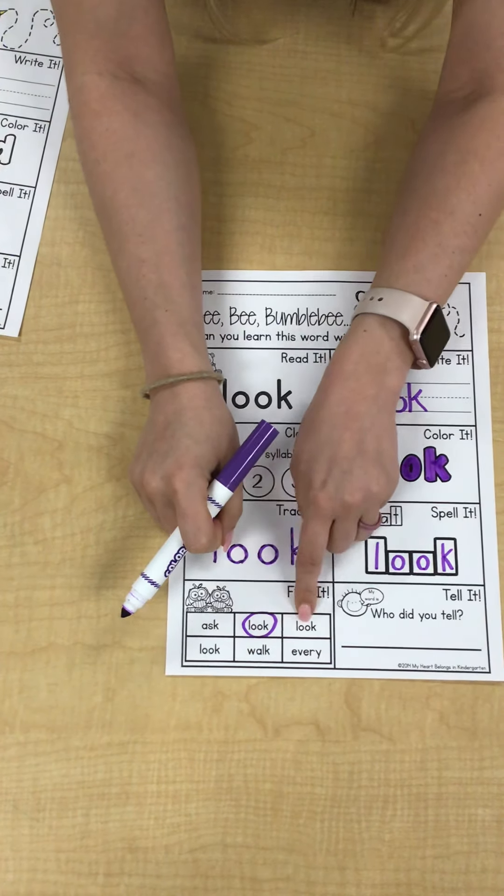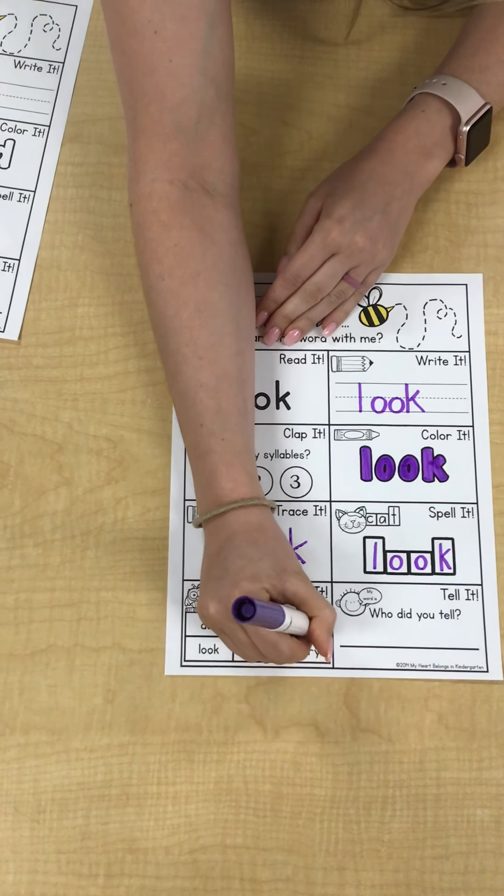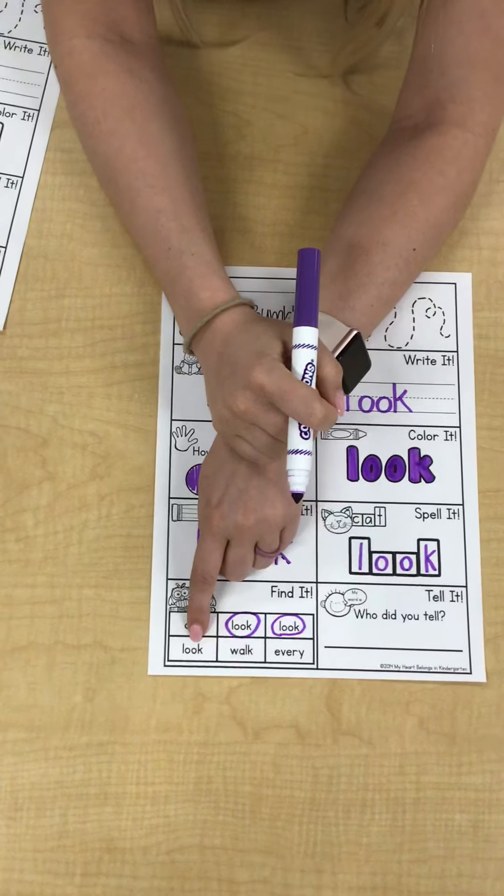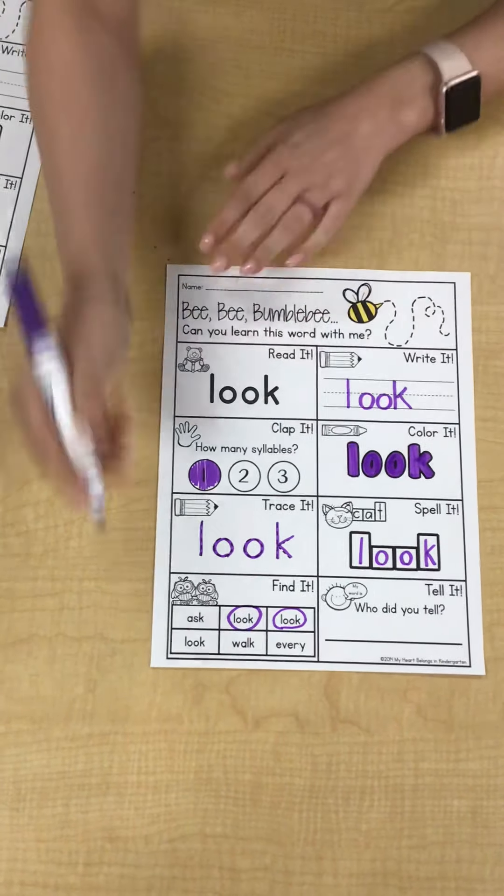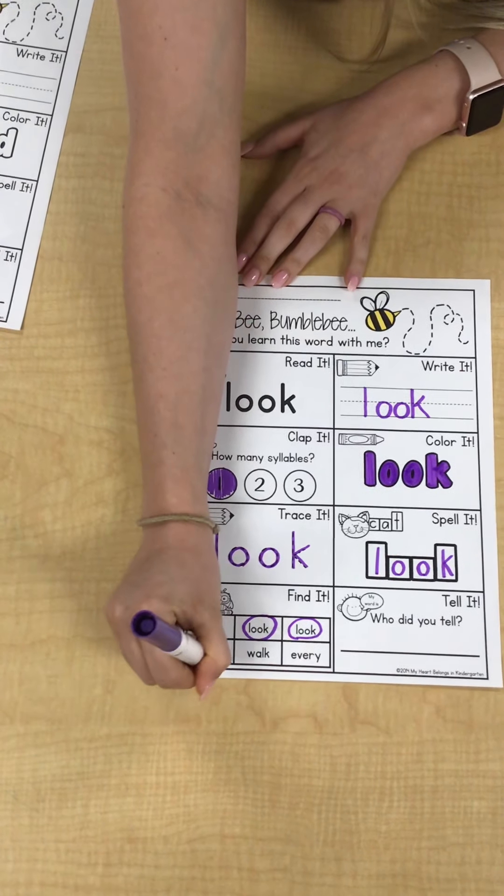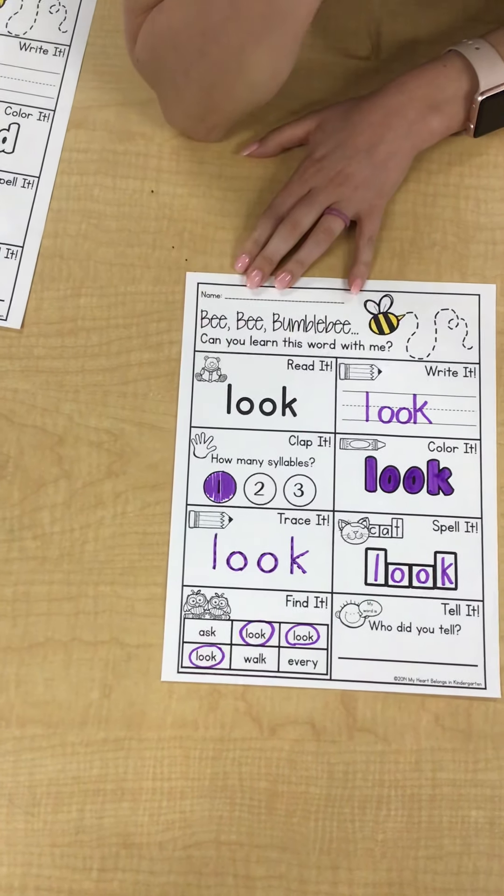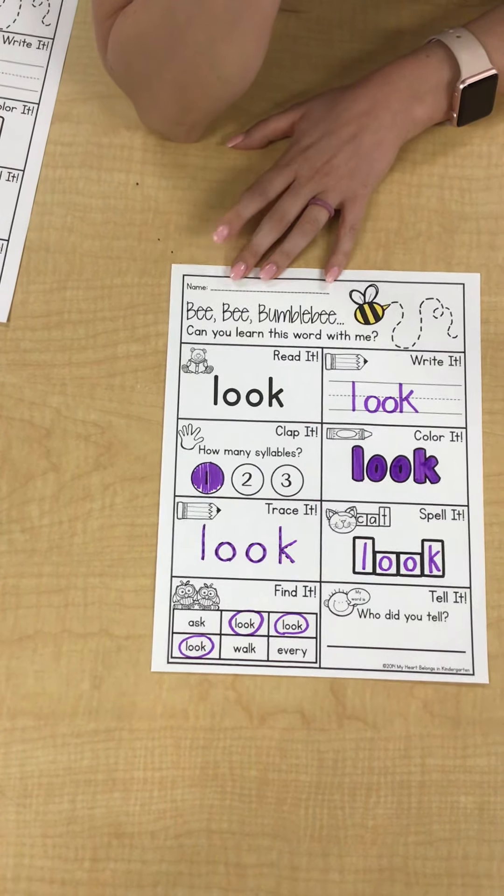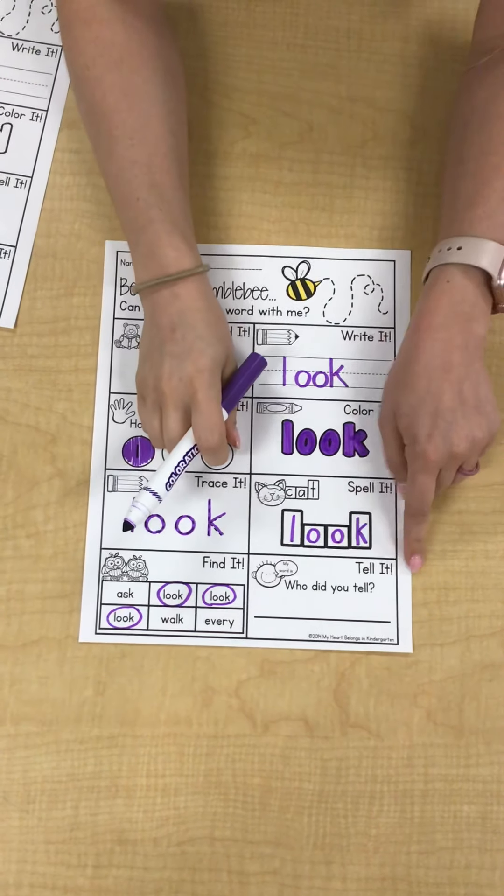Moving on, it says trace it. We're going to trace the word look. L, straight line down. O, O, O, and K. Straight line down, little line in, little line down.